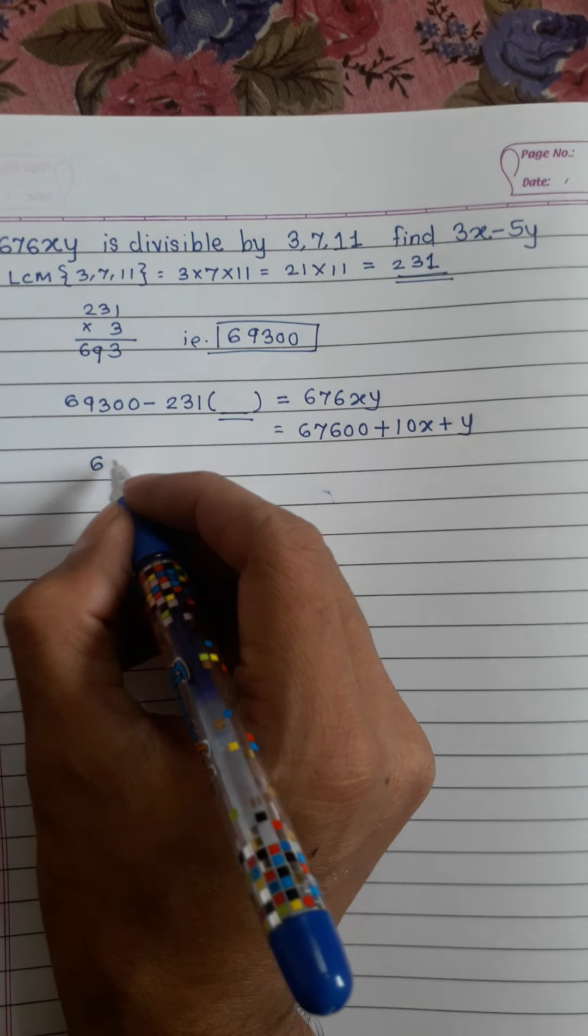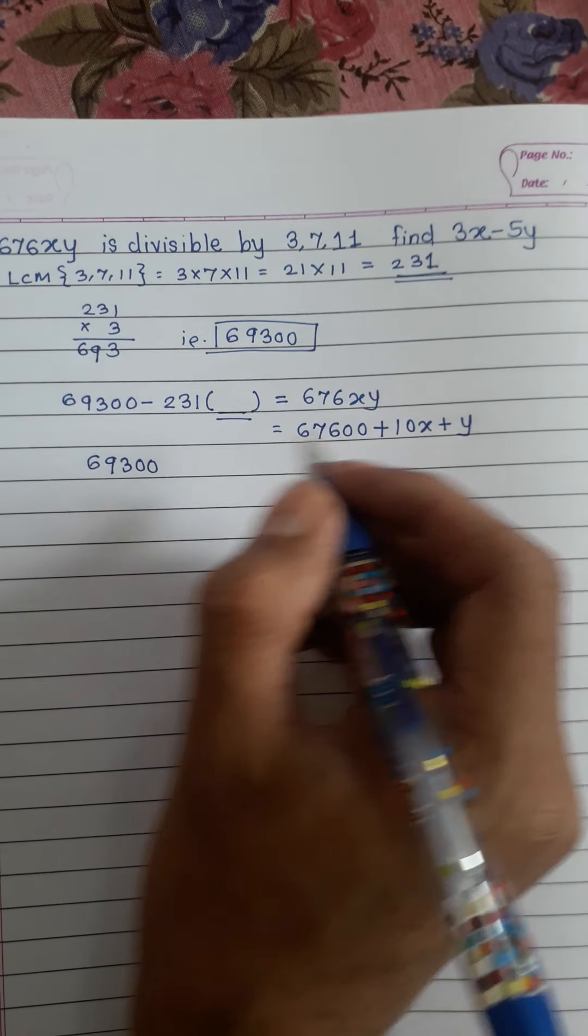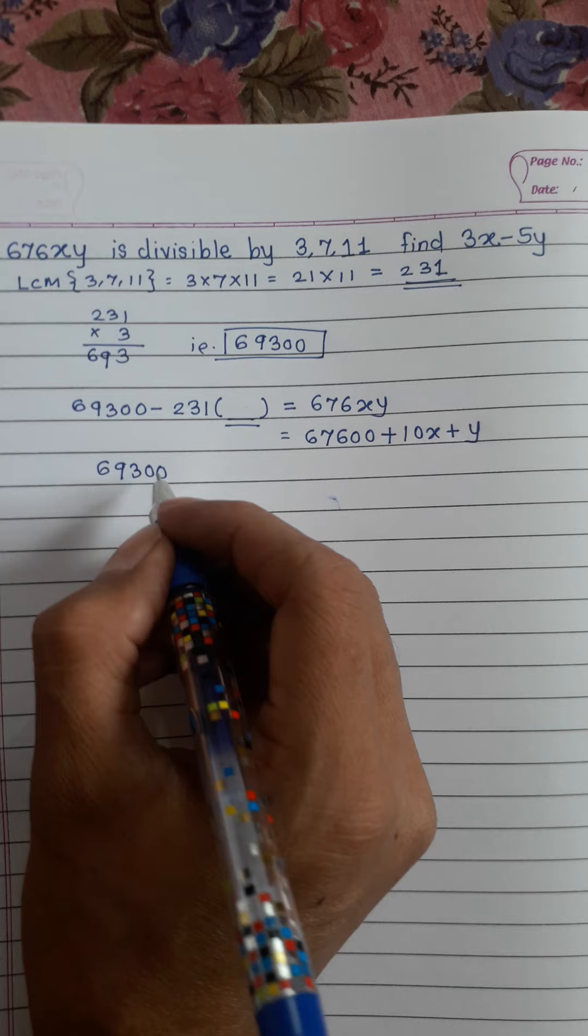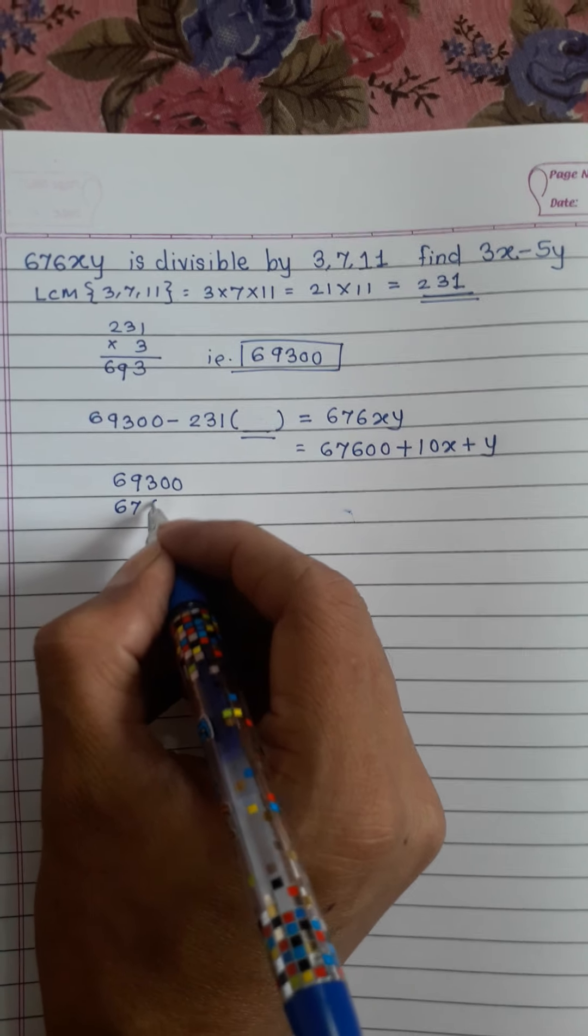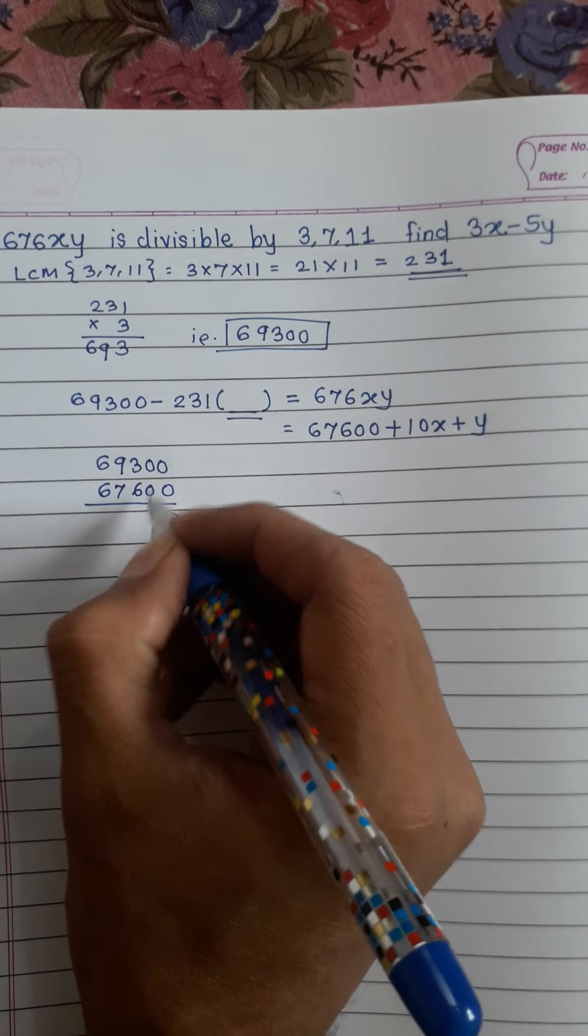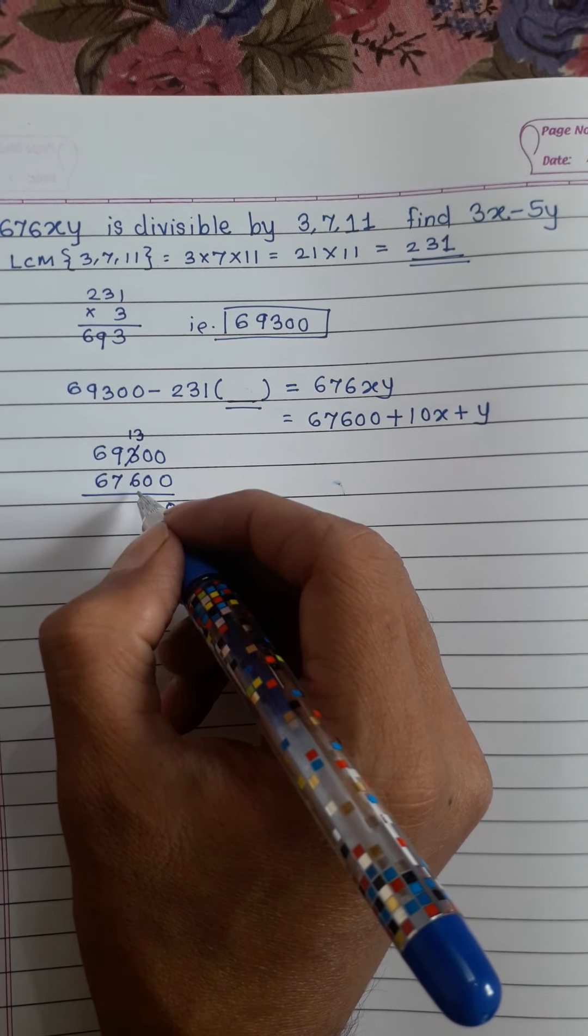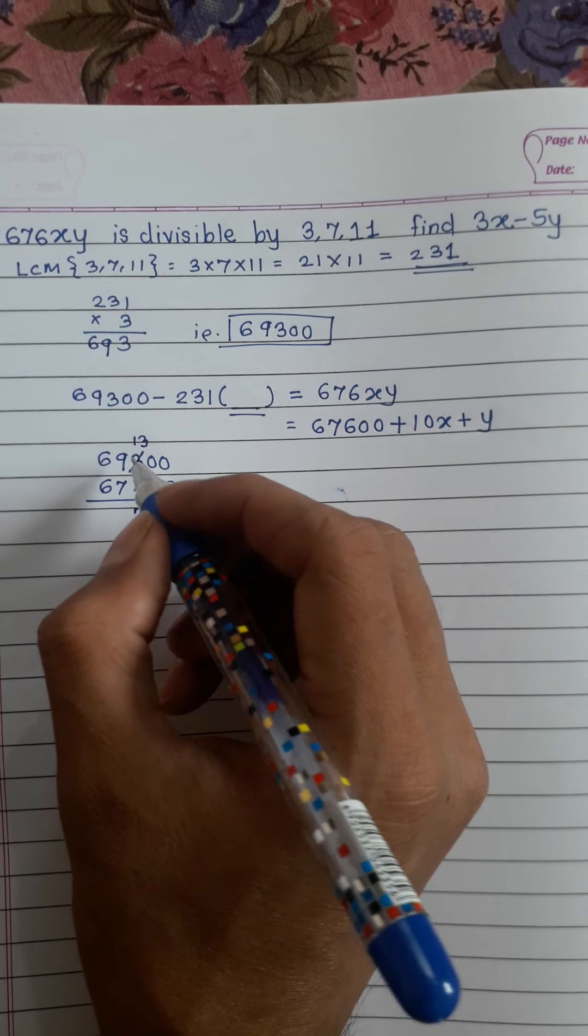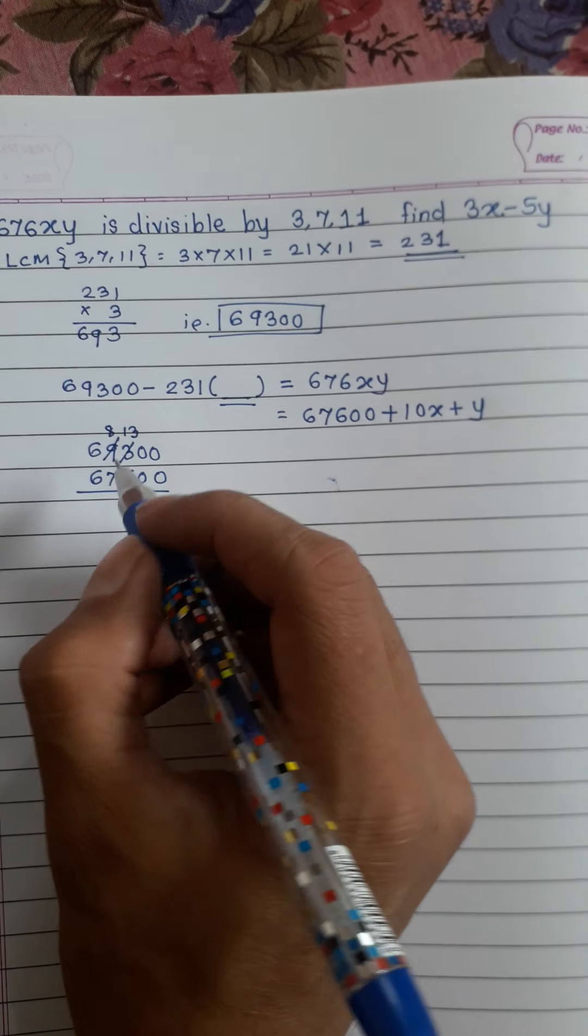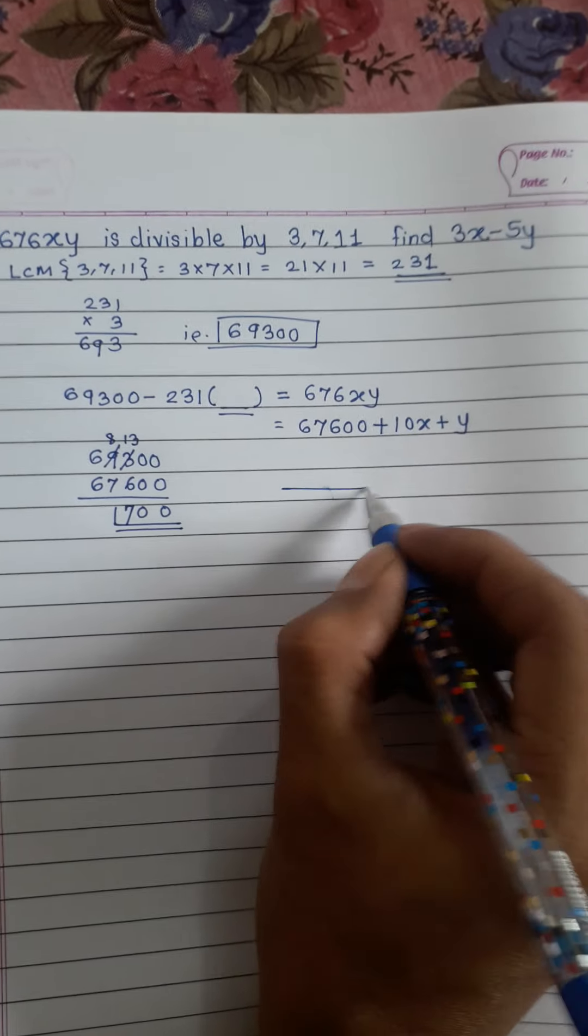do, we will subtract 6 7 6 double 0 from 6 9 3 double 0. 6 7 6 double 0, we will just 0 0 is 13 4 7, this is 8, this is 1 7 double 0. Now we